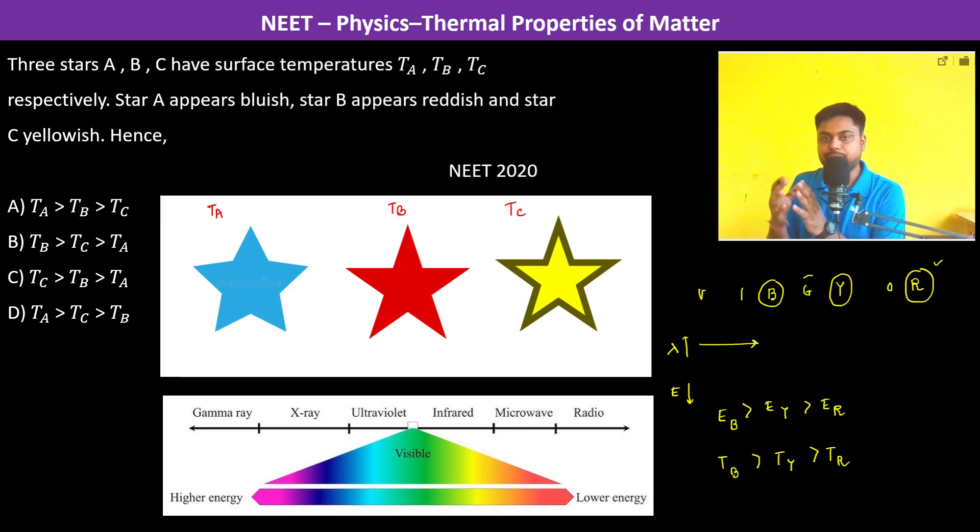When it is emitting light, the light which has the maximum energy is the blue light. The maximum energy in the light corresponds to the blue light, so therefore the temperature of the blue star must be the greatest.